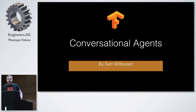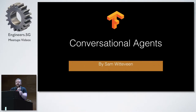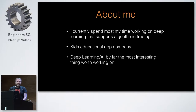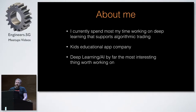And the different types of them. I think there's a lot of confusion around conversational agents — about what they can do, how you make them, and the various types. About me: I spend most of my time working on deep learning that supports algorithmic trading. I have a startup, a children's app company with about 4 million users, and the team runs it itself. I think deep learning is by far the most interesting thing to be working on nowadays.